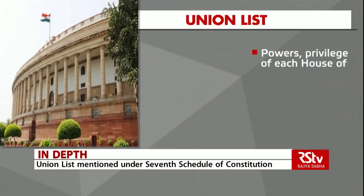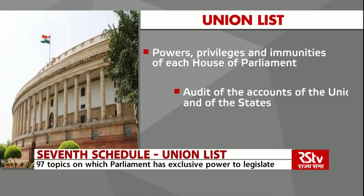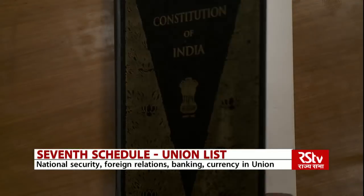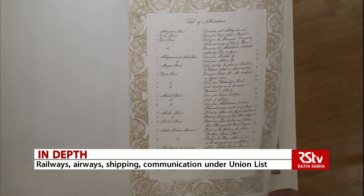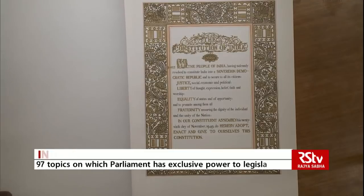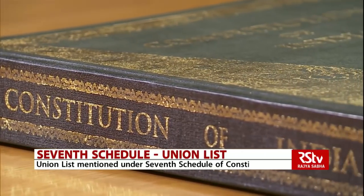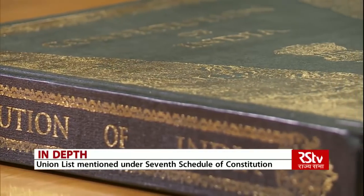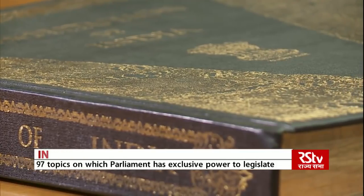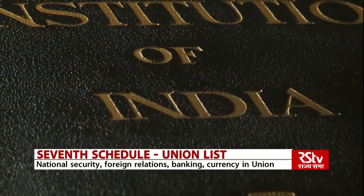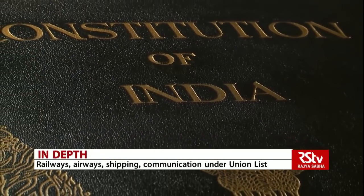Powers, privileges and immunities of each house of Parliament and the audit of the accounts of the union and of the states. Constitution, organization, jurisdiction and powers of the Supreme Court and High Court also fall under the union list. Central taxes, duties and customs including export duties. The Parliament can also legislate on offences against laws with respect to any of the matters in this list. Inquiries, surveys and statistics for the purpose of any of the matters in this list are under the scope of the union list.